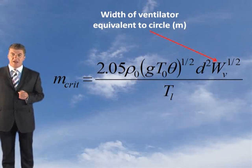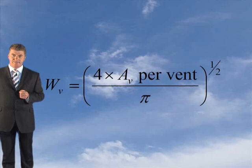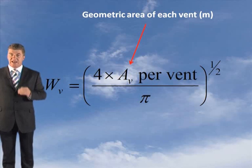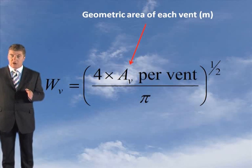Now you've got to determine WV and this is the formula to apply. WV equals 4 times AV per vent, now this is the geometric area, this is once you've taken into account the efficiency of the ventilator, divided by π and the whole lot square rooted.